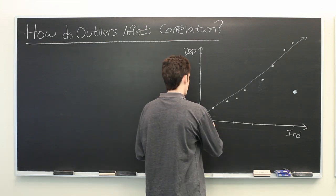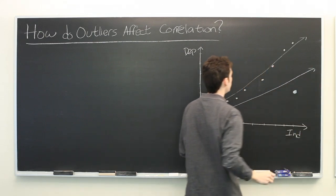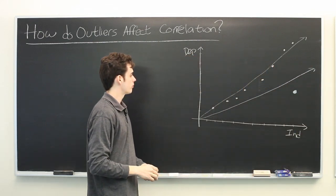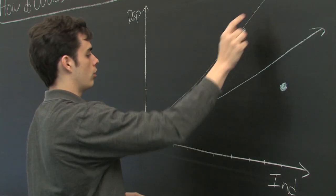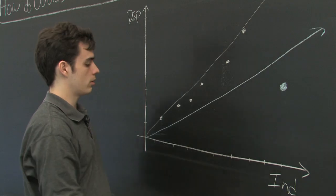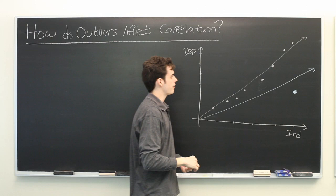See that this line runs very close to all of the points whereas this one which is being brought down by our outlier isn't all that close to any of them.